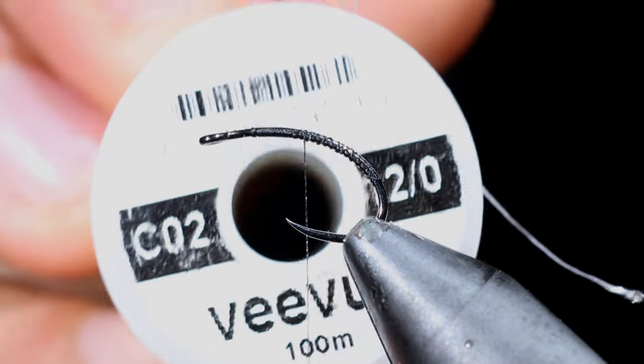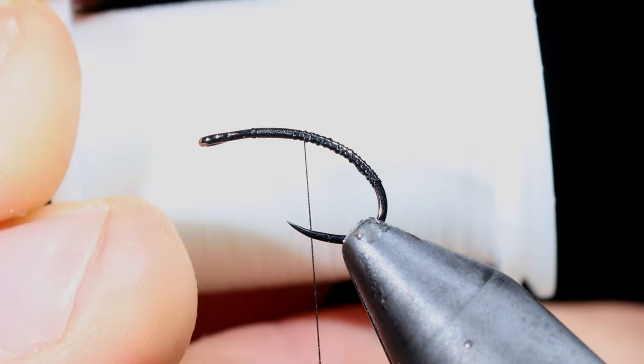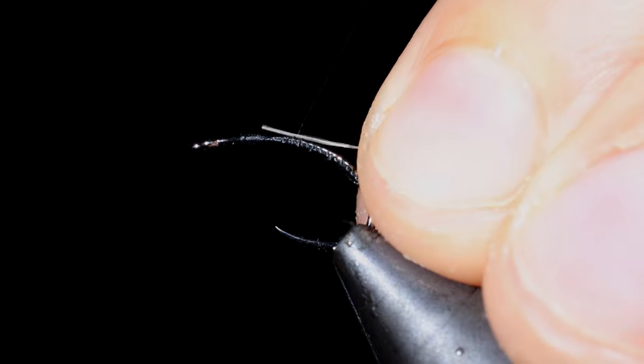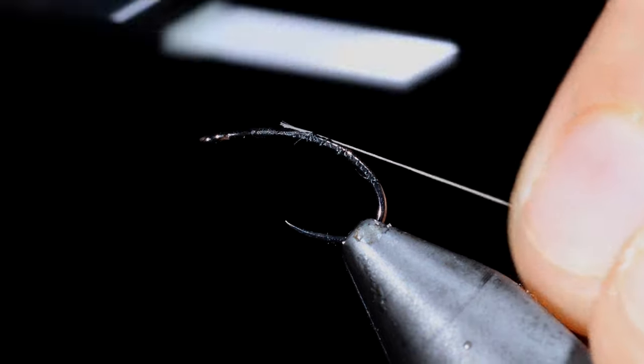Return your thread just above the hook point and grab some white Vivas. Secure tightly to your hook shank, wrapping back into the bend of the hook.